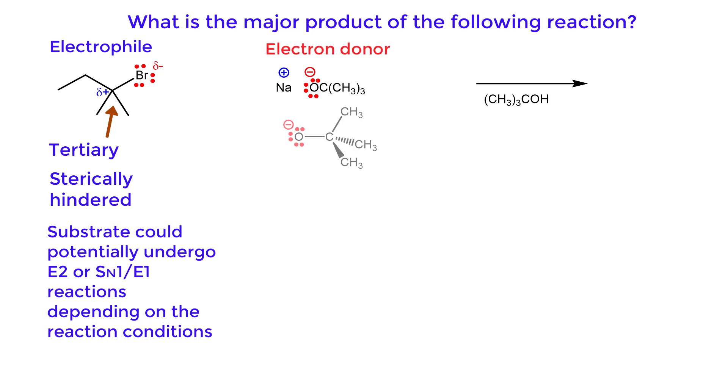The electron donor, t-butoxide, is a bulky sterically hindered strong base that is a very poor nucleophile.